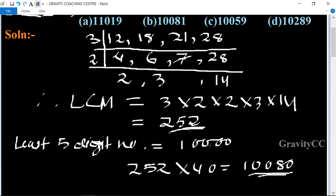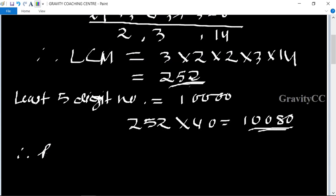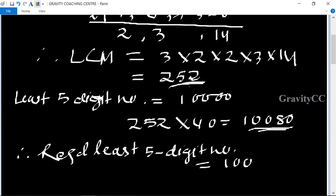If we divide these numbers into 10,080, it will be exactly divisible, giving us the same remainder. The required least five-digit number equals 10,080 plus one.